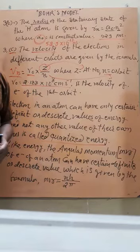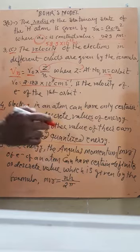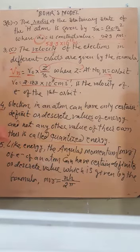So if the electron is present in a particular orbit, this is the energy of that particular orbit. Now, as the energy is quantized, similarly the angular momentum is also quantized.